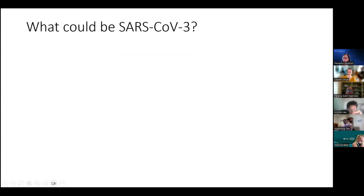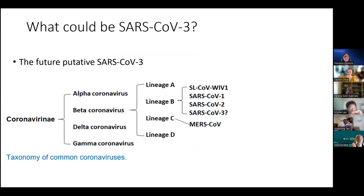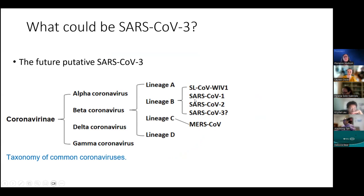So what could SARS-CoV-3 be? If we look at the coronavirus family tree, I put the future putative SARS-CoV-3 just after SARS-CoV-1 and SARS-CoV-2. I have to highlight that for SARS-CoV-1, SARS-CoV-2, and MERS-CoV, all of them belong to the beta coronavirus.